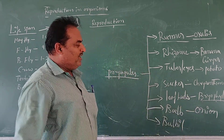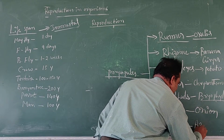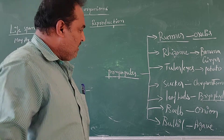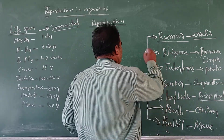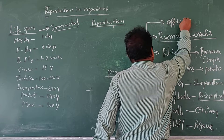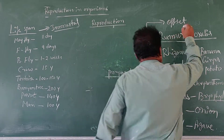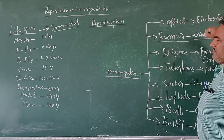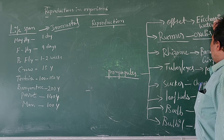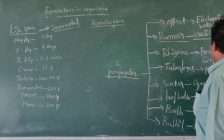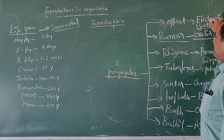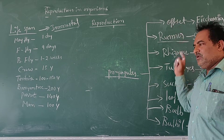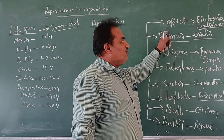The best example for bulbil is Agave species. One more type of propagule is offset. The best example for offset is Eichhornia, commonly called water hyacinth. Eichhornia drives oxygen from stagnant water. Therefore all the aquatic organisms are destroyed due to excessive growth of Eichhornia.